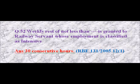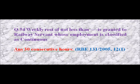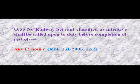Question 52: Weekly rest of not less than how many hours is granted to a railway servant whose employment is classified as EI? Answer: 24 hours including a full night. Question 54: Weekly rest of not less than blank is granted to a railway servant whose employment is classified as continuous — Answer: 30 consecutive hours. Question 55: No railway servant classified as intensive shall be called upon for duty before completion of rest of — Answer: 12 hours.